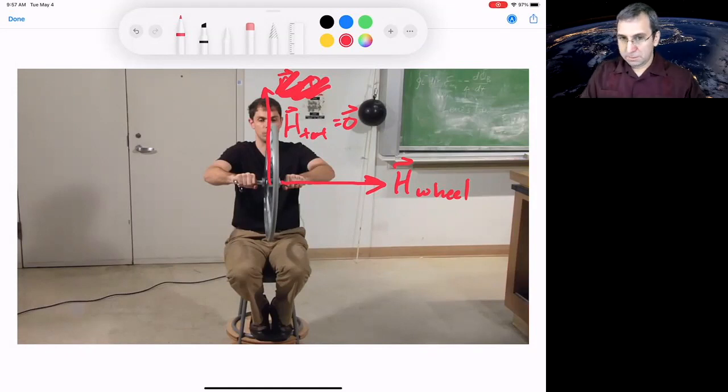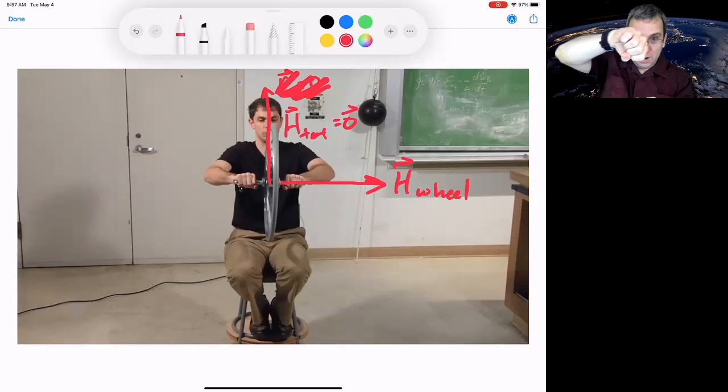if he takes that wheel and he twists it one way or the other, to maintain total angular momentum zero, he will have to spin.